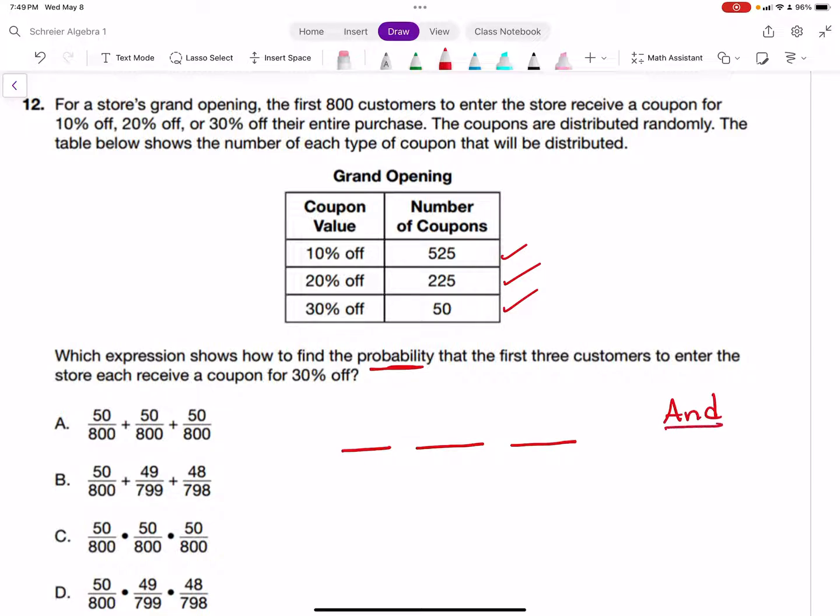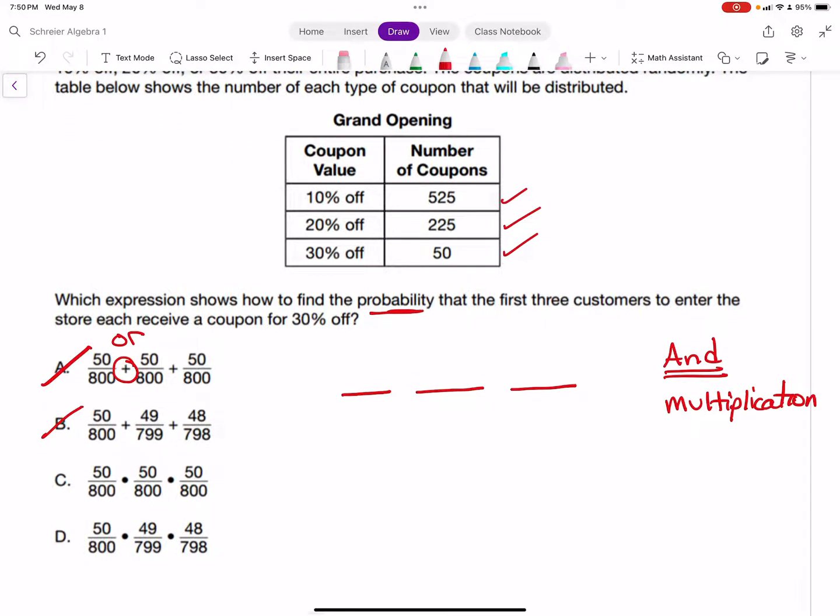I want the first customer to get a 30% off coupon AND the second customer to get a 30% coupon AND the third customer to get a 30% off coupon. When we think of AND in probability, we should be thinking about multiplication. That eliminates answer A and B because they're dealing with addition. We would see OR if we were dealing with addition. So the answer is C or D.